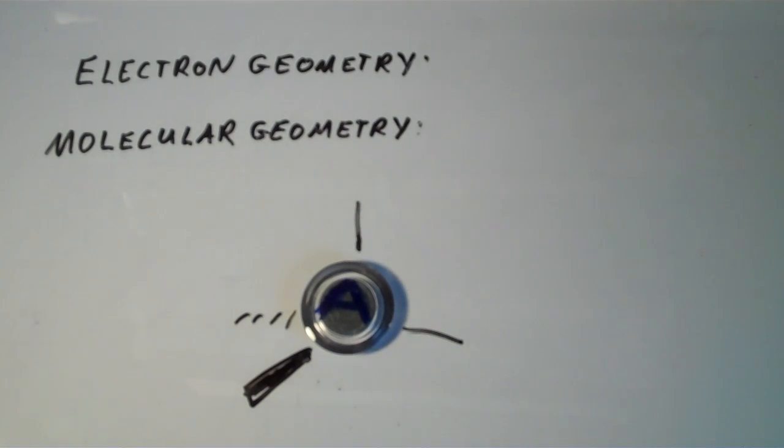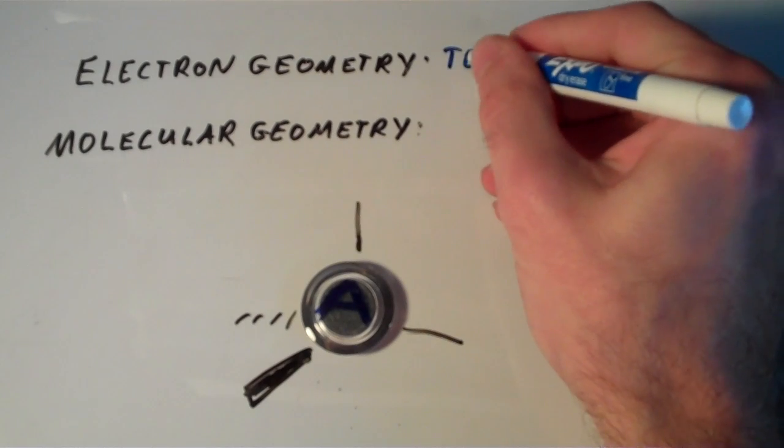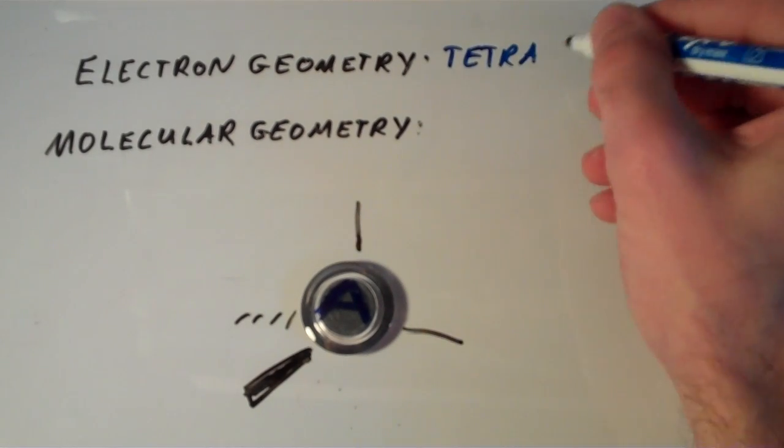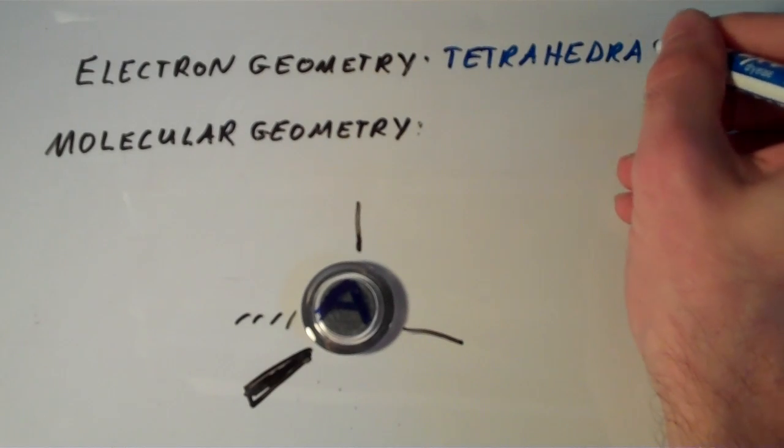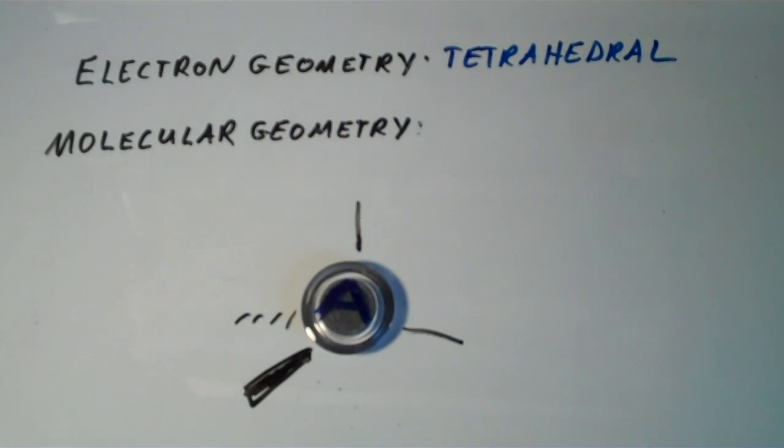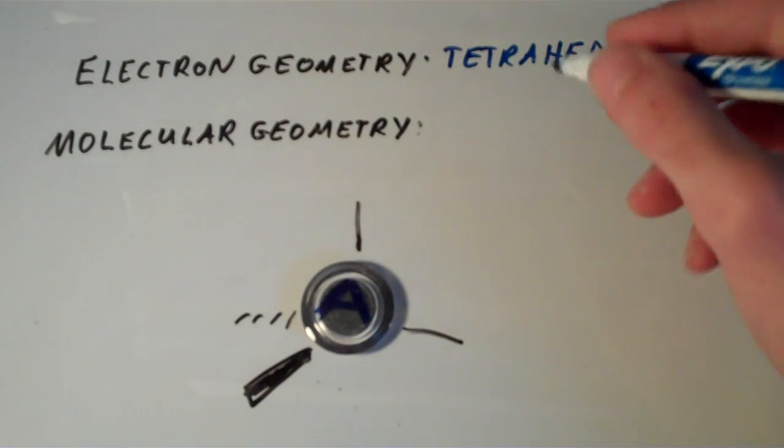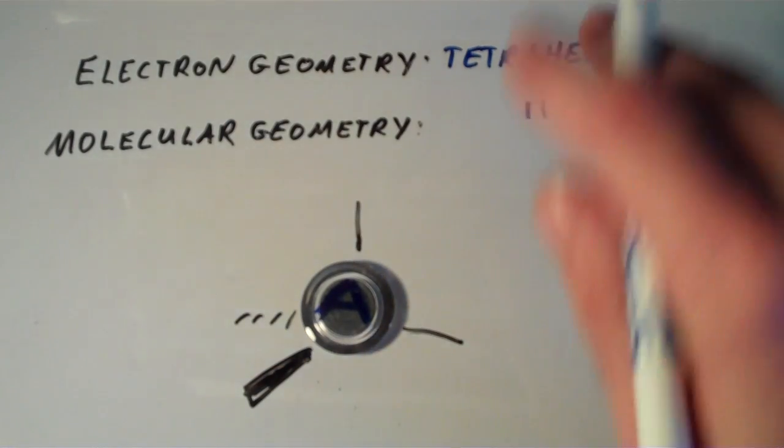The electron geometry, we call that tetrahedral. If none of these electron groups are lone pairs, then the molecular geometry is going to be the same thing, which would also be tetrahedral.